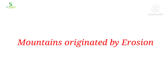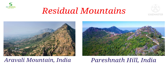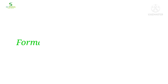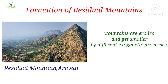Mountains that are originated by erosional processes are called residual mountains. The Aravalli and Parasnath mountains in India are notable examples. Residual mountains generally don't have conical peaks — their peaks get rounded due to exogenetic forces, and they have gentle slopes. They are formed when mountains are eroded by different exogenetic forces or agents of degradation like wind, running water, and frost, leaving behind smaller, harder rocks.